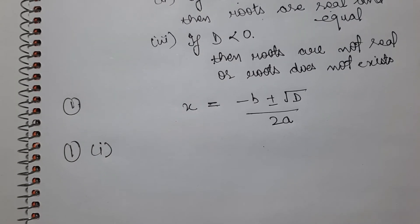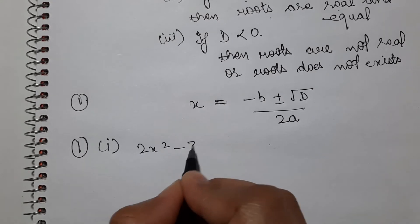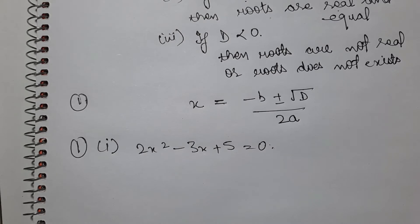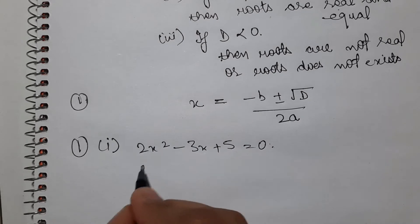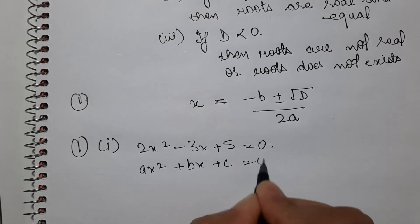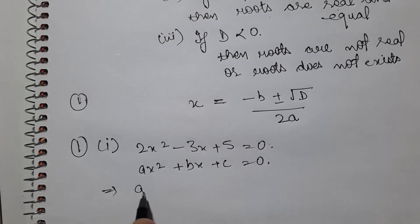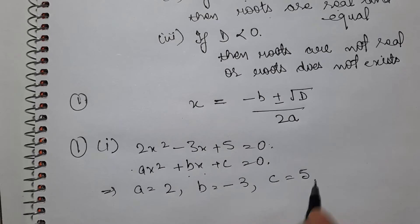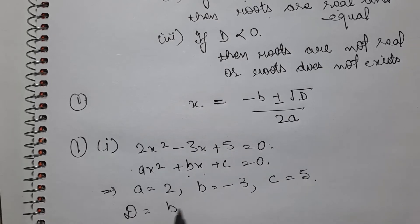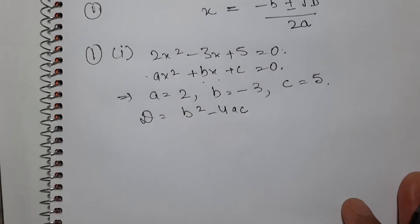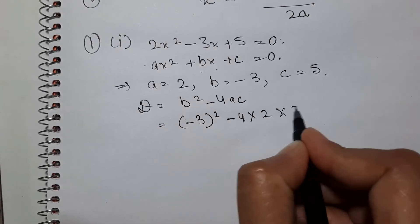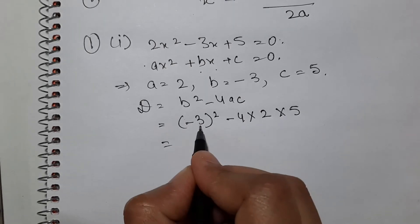Question 1, first part: 2x² minus 3x plus 5 is equal to 0. First, let's find the nature of roots. Comparing with the general equation ax² plus bx plus c equals 0, we get a equals 2, b equals minus 3, and c equals 5. Then the discriminant D equals b² minus 4 times a times c, which is minus 3 whole squared minus 4 times 2 times 5.